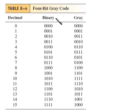So in Table 8-4, I'm comparing the two code systems. The binary code just goes 0, 1, 2, 3, 4, 5, 6, 7, all the way up to 15. Whereas the gray code is slightly different.